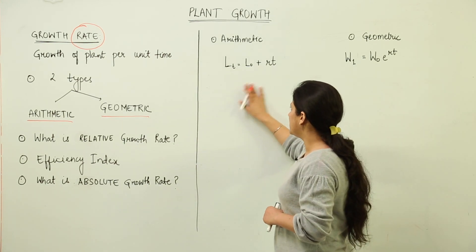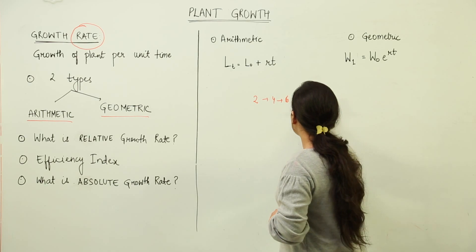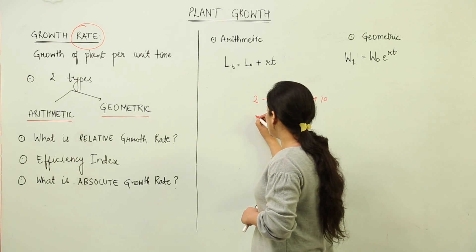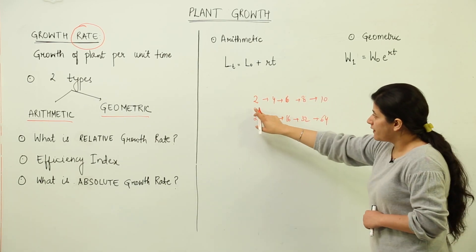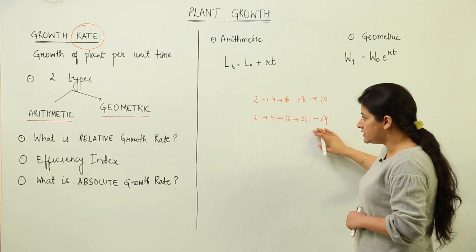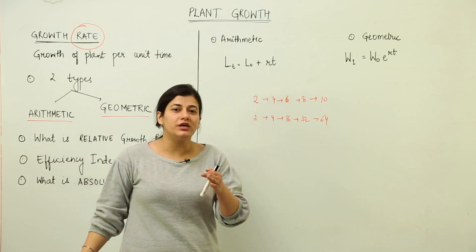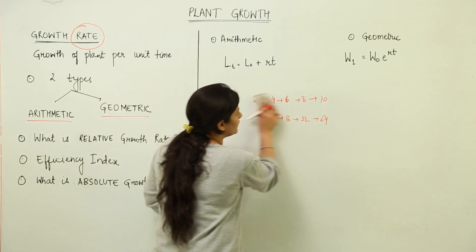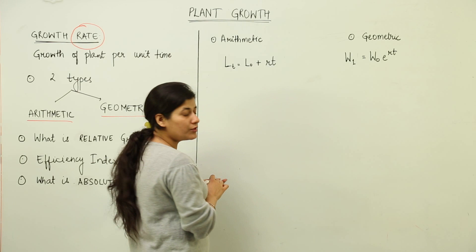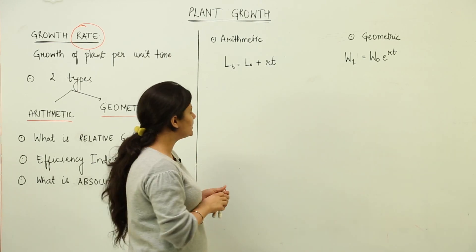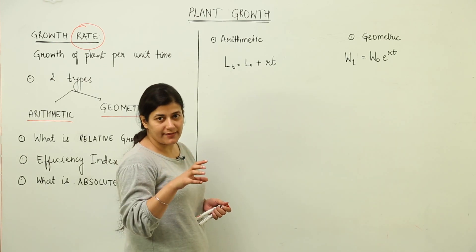For understanding: in arithmetic progression, 2 becomes 4, then 6, 8, 10 — the increase is gradual. In geometric growth it goes 2, 4, 16, 32, 64 — the increase is much larger. When we talk about growth in terms of cell division, arithmetic growth involves mitotic divisions adding to the cell content of the plant, and how that leads to growth over a time span, giving the growth rate.